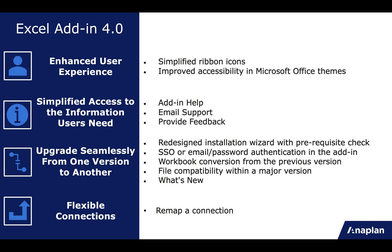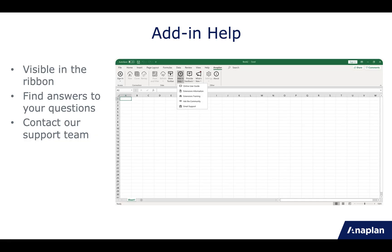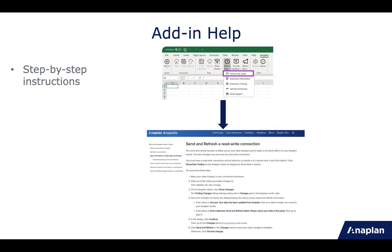We've also simplified access to the information our users need, based on your feedback. If you need some help with questions about the add-ins, the add-in help functionality is now visible from the ribbon. The first item is the online user guide — if you click on it, it will open Anapedia, where you can find step-by-step instructions for all functionalities. If you don't know how to use a feature, such as Send and Refresh or clone connection, go to Anapedia from this button.